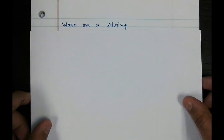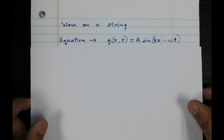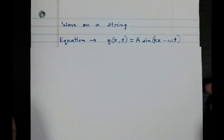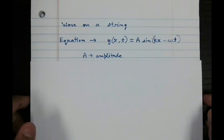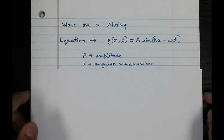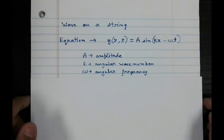Let's talk about wave on a string. The equation for wave on a string is given by y, which is a function of position and time equal to A sin(kx - ωt). Here A is the amplitude of the wave, k is the angular wave number, and ω is the angular frequency.